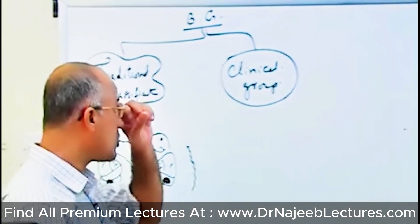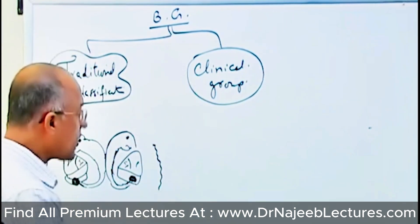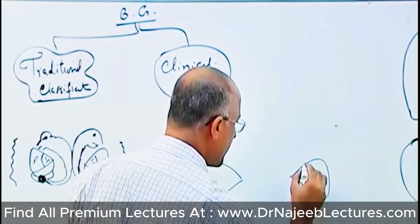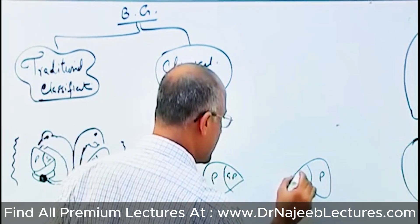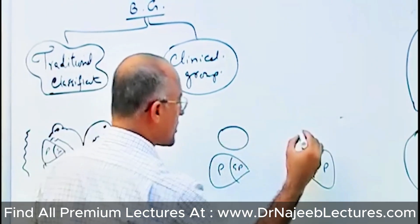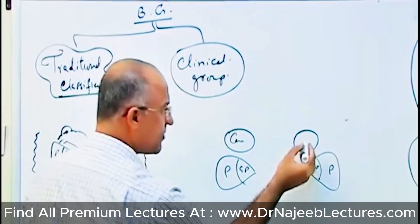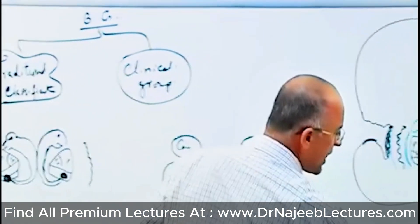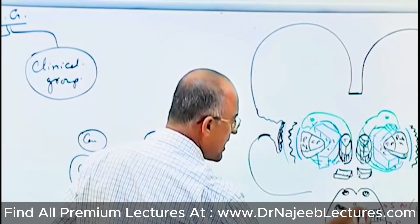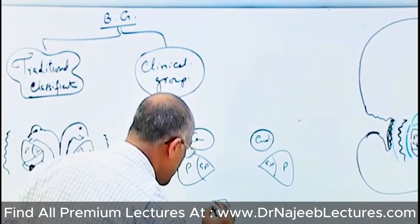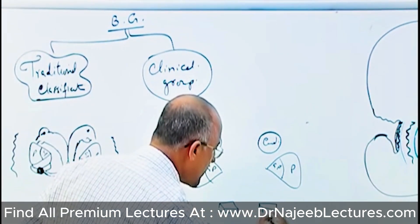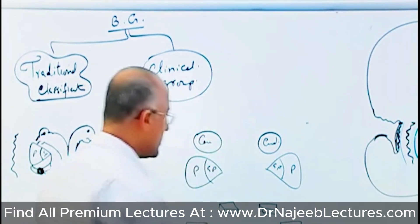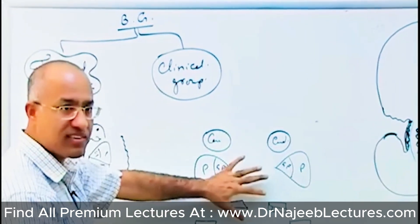But now, most neurologists are following the clinical concept. Clinically, lentiform nucleus is included — putamen with globus pallidus — and caudate nucleus. With these structures, functionally there are two related nuclei: the subthalamic nucleus and substantia nigra. So clinically, basal ganglia include the caudate with lentiform nucleus, plus the subthalamic nucleus and substantia nigra.